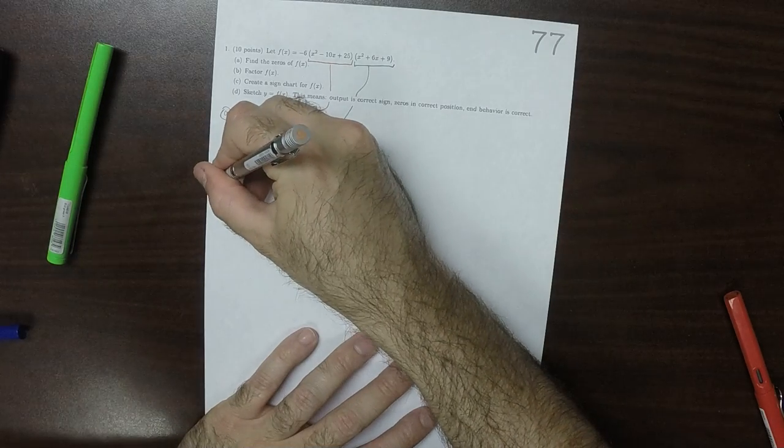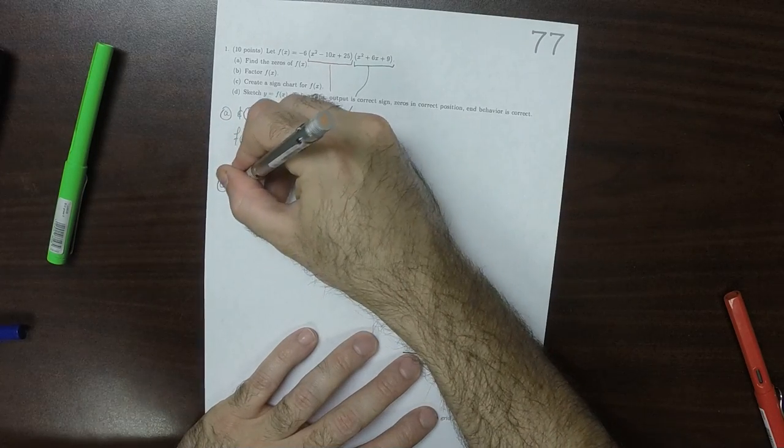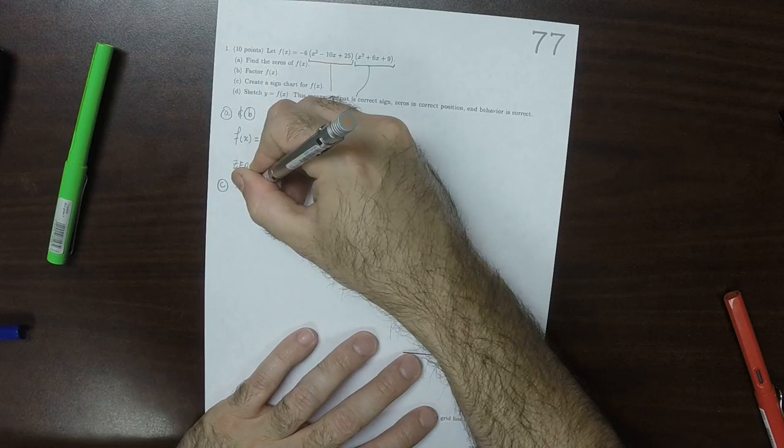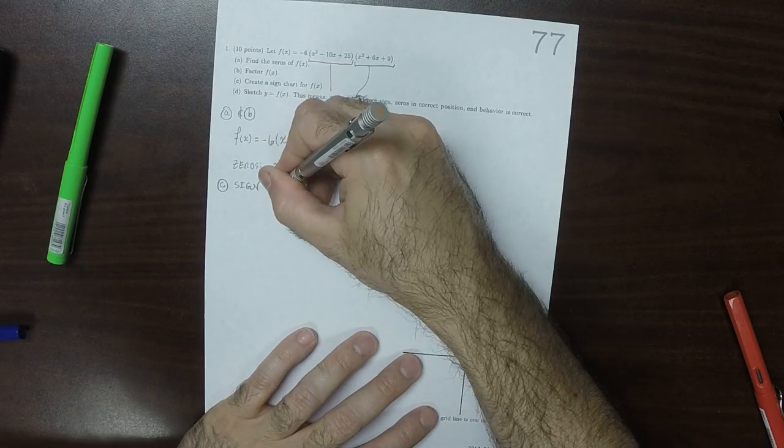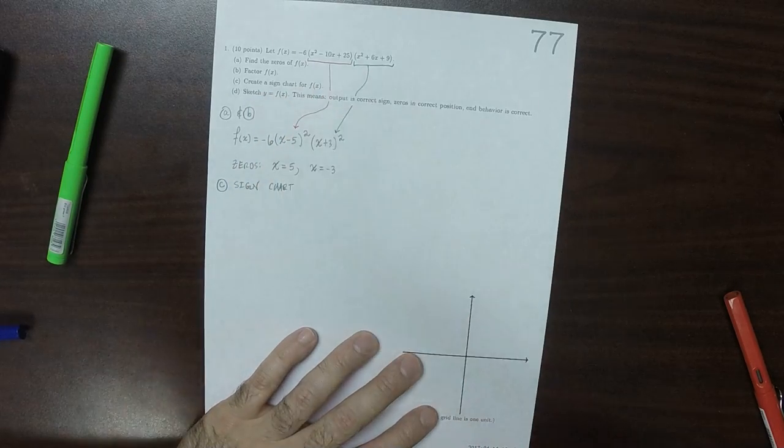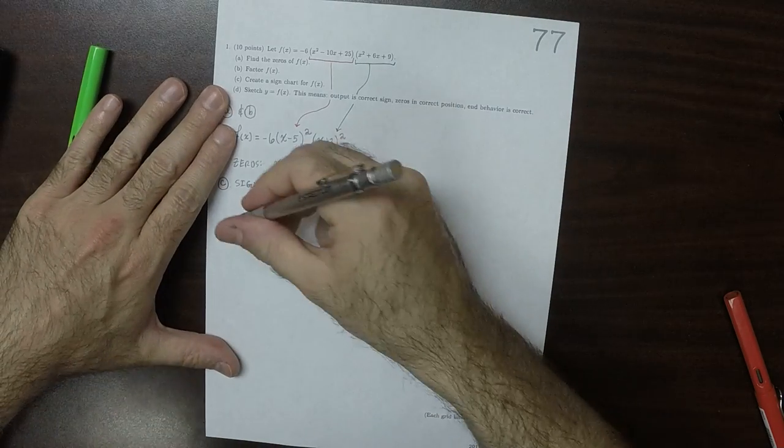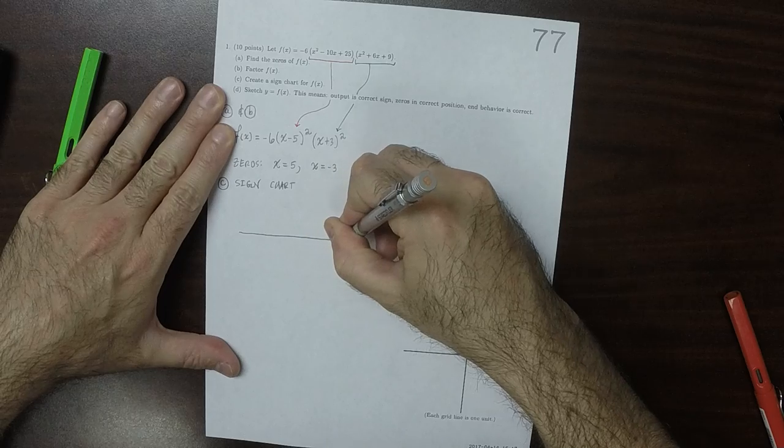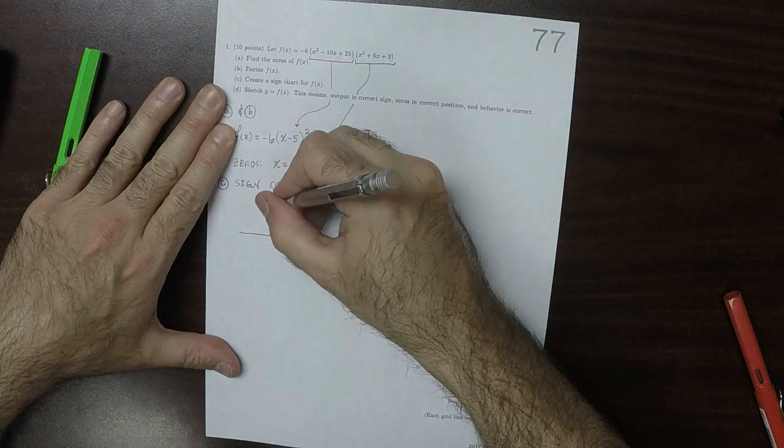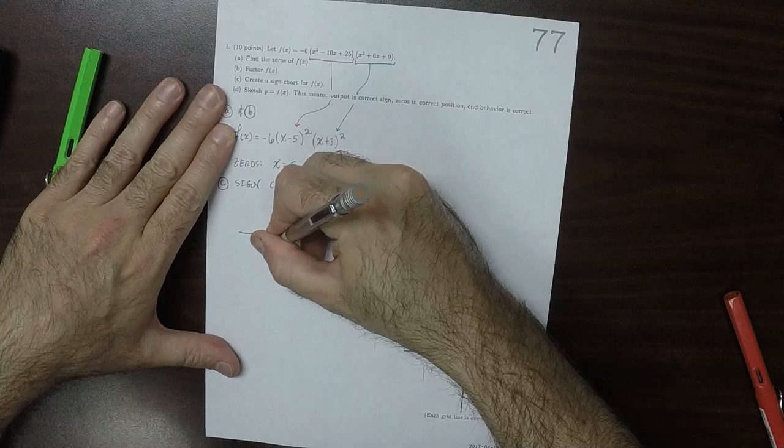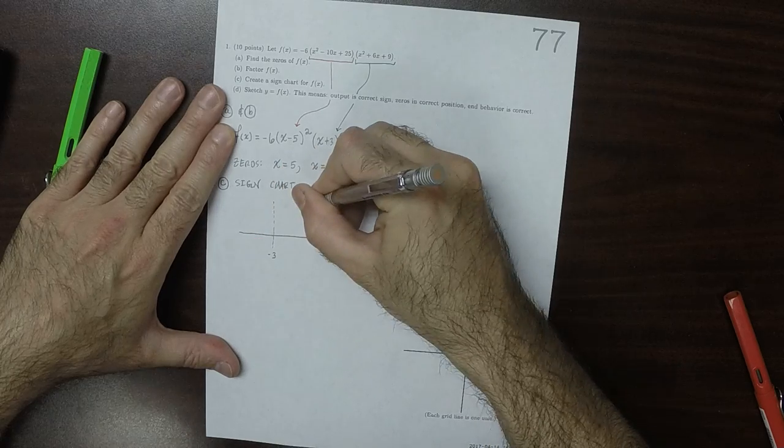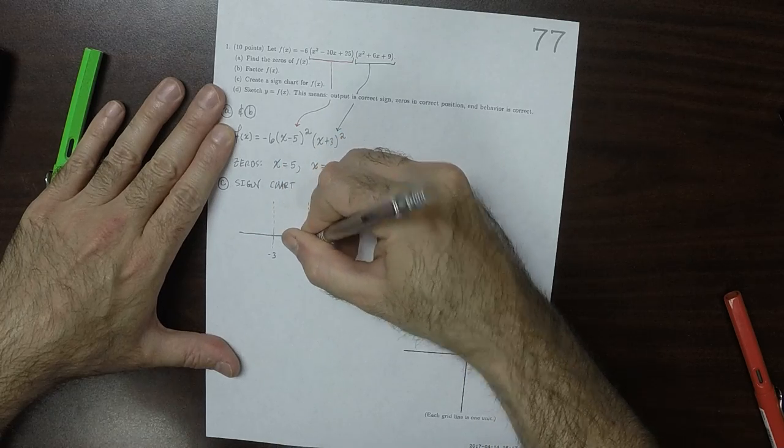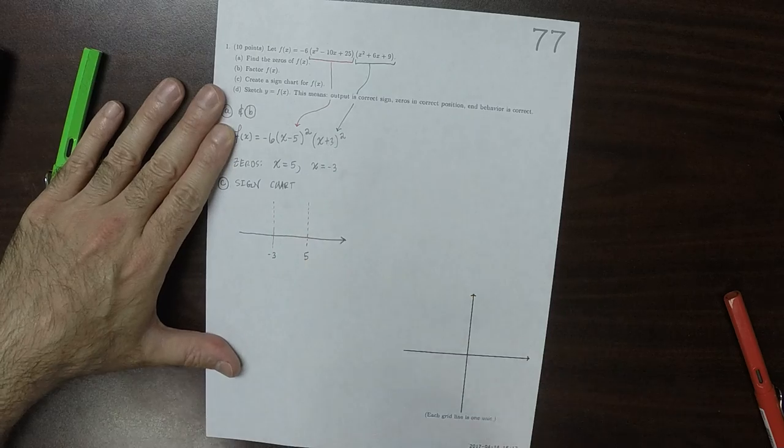For part c, the sign chart. We could plot a number line. There's just the two zeros, negative 3 and positive 5.